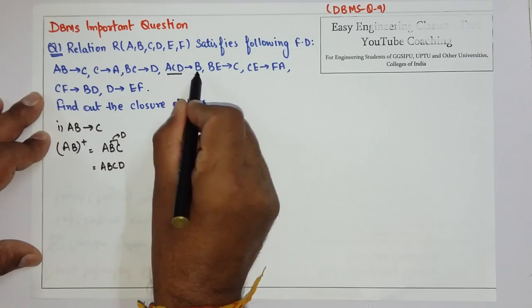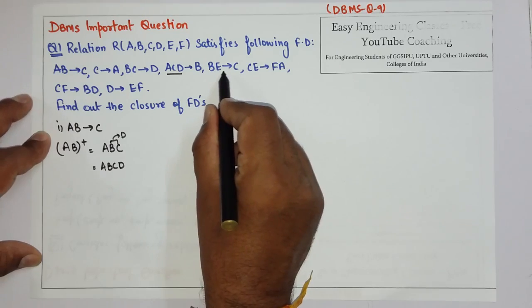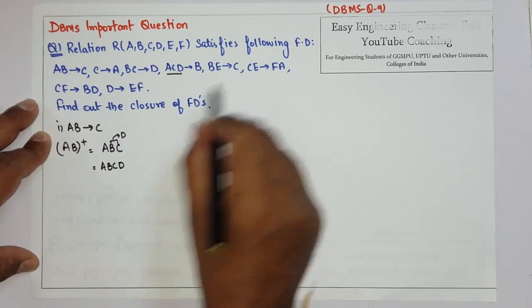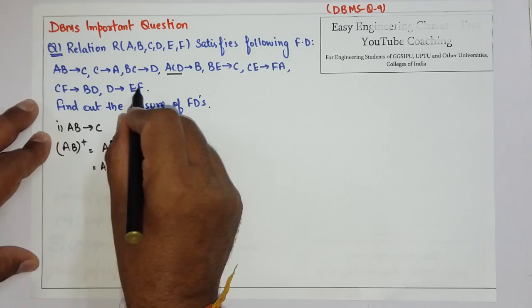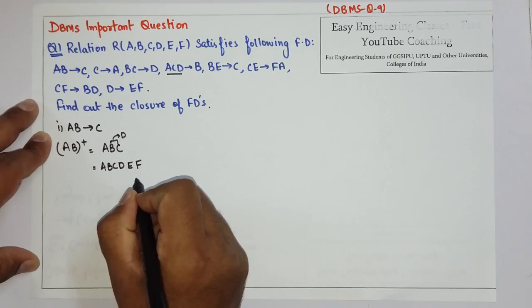From ACD I can get B. B is already here. From BE I can get to C. But E is not there and similarly E is not there. But from D I can get to EF. So write here E and F.